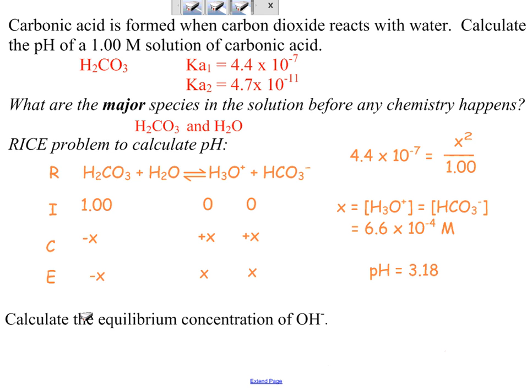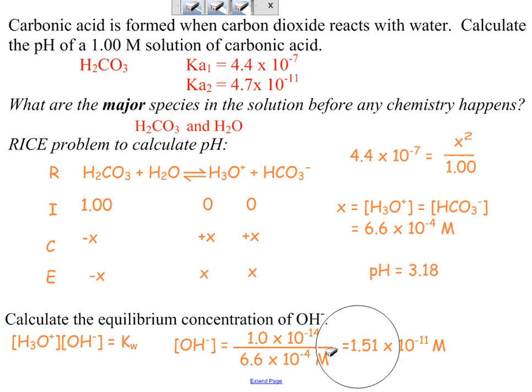The second step says find the equilibrium concentration of hydroxide. Well, you know that if you know hydronium ion concentration, you can find hydroxide ion concentration. So pause and find that. So did that work out the way you planned? Hydroxide ion is much smaller than hydronium ion.